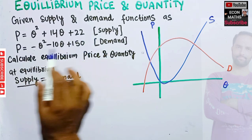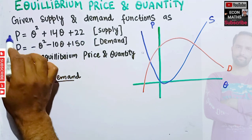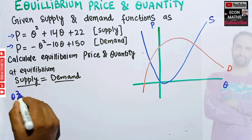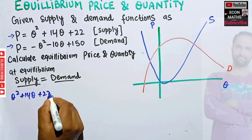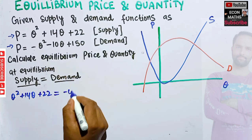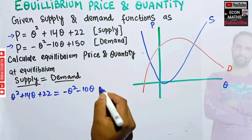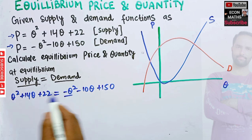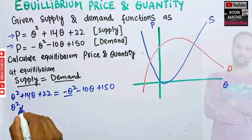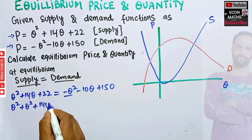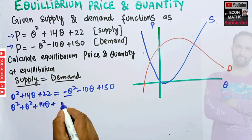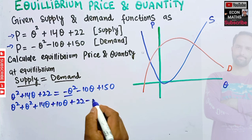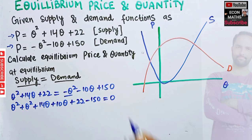At equilibrium, supply equals demand. Since both functions have P on the left-hand side, we equate the right-hand sides: Q² + 10Q + 22 = -Q² - 10Q + 150. Transposing terms, we bring everything to one side: Q² + Q² + 10Q + 10Q + 22 - 150 = 0.